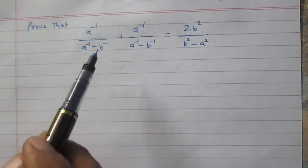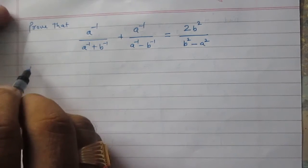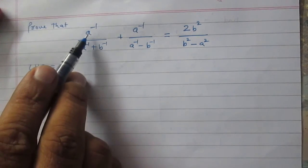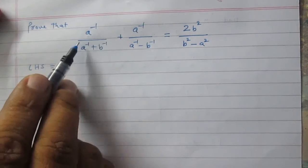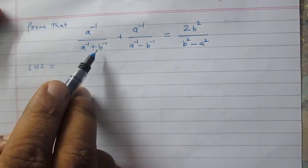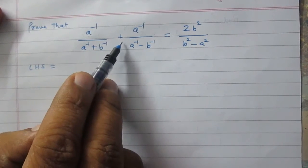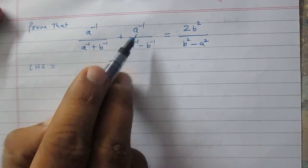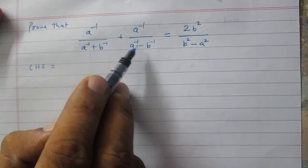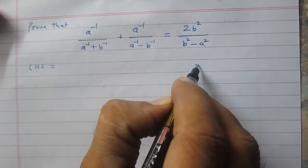Let us consider the left hand side of this identity. The left hand side is equal to a raised to the power minus 1, divided by the sum of a raised to the power minus 1 and b raised to the power minus 1, in addition with a raised to the power minus 1 divided by the difference of a raised to the power minus 1 and b raised to the power minus 1.